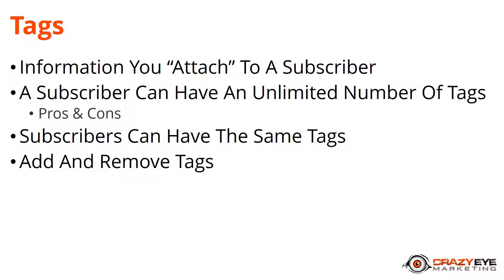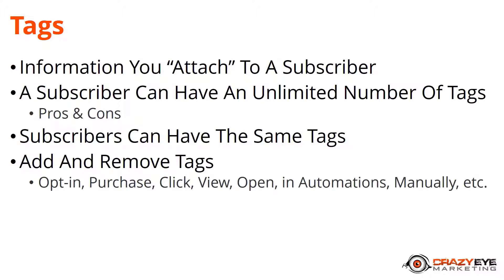You can add and remove tags when somebody opts in and enters their contact information into an opt-in form, when they purchase a product or service, when they click a link in an email, or when they view a page on your website if you have site tracking installed. If they open an email you could add or remove a tag. You can also add and remove tags within automations themselves, or manually — those are the big ways.